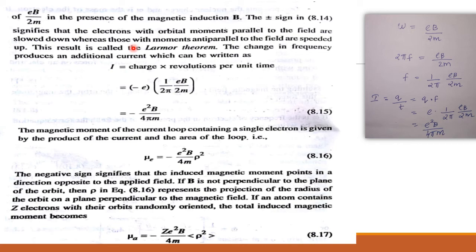This change in frequency results in Larmor's theorem. The change in frequency produces an additional current. Since current is charge per unit time, and frequency is 1/time, using Δω = eB/2m, we get 2π·Δf = eB/2m, giving Δf = eB/(4πm). Substituting into the current expression, we get: i = −e²B/(4πm). The negative sign shows the charge is negative.